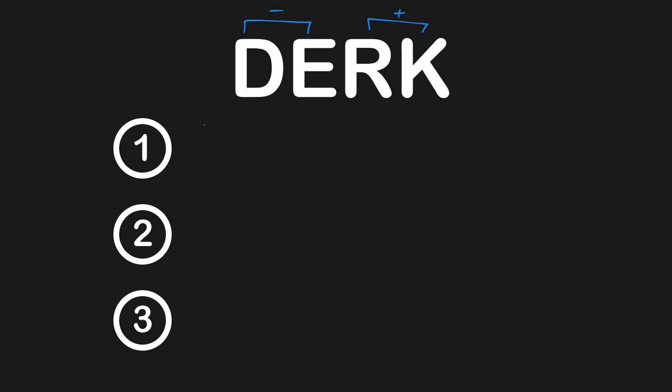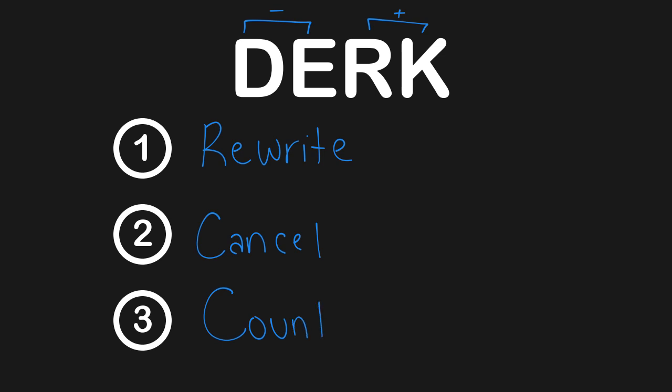So how do we actually solve these net charge questions? There are three major steps. First is rewrite — we rewrite a particular peptide sequence with only the DIRK amino acids listed. Second, we cancel — cancelling positive and negative amino acids with one another. And lastly, we count. After cancelling, all we'll have left is one type of charged amino acid, and counting that gives us the net charge for the overall peptide sequence.